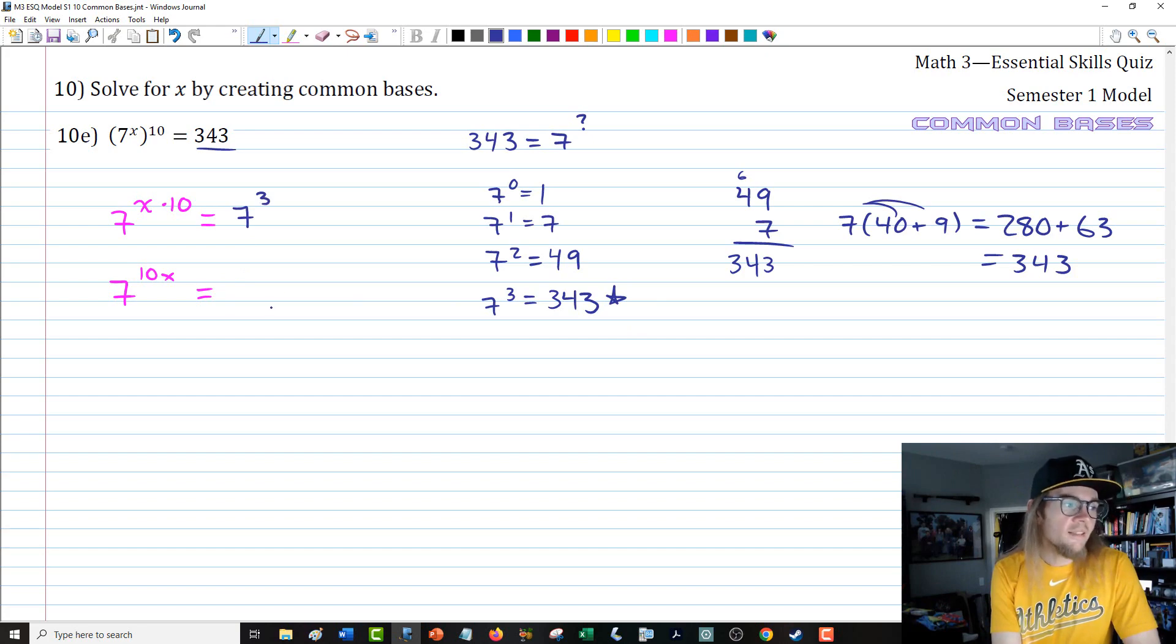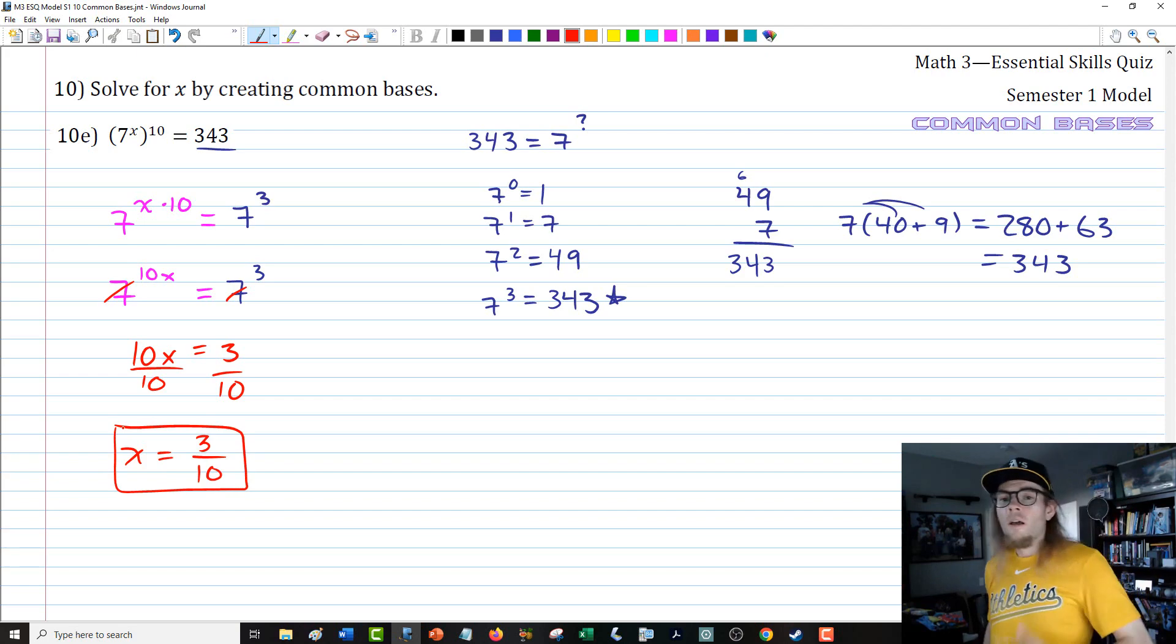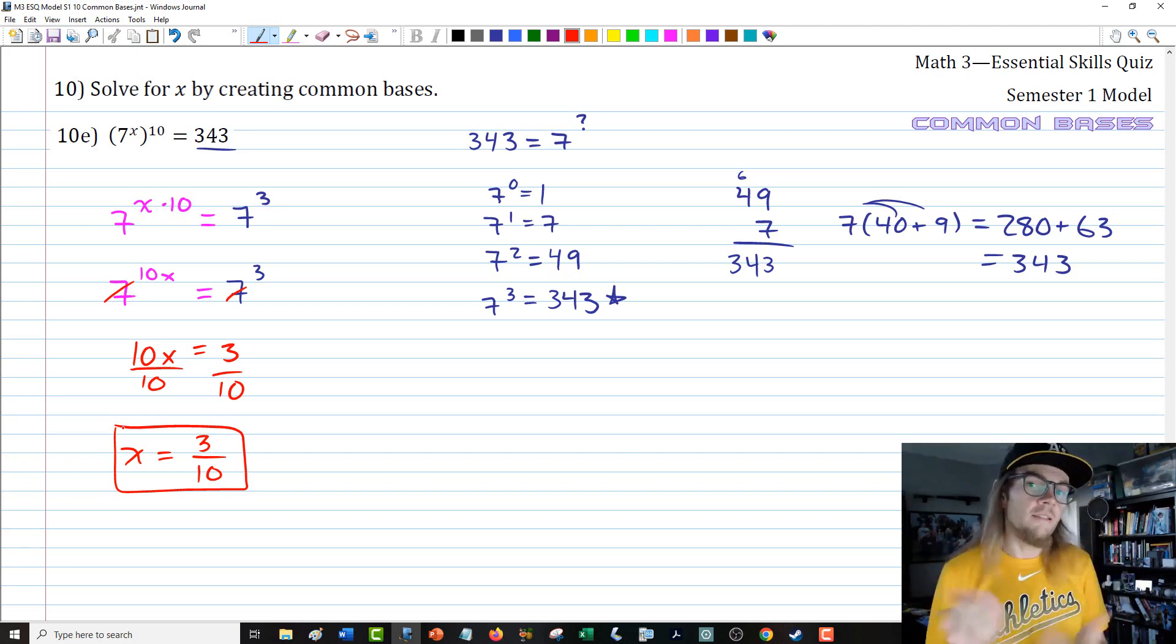That means we can write this as 7 to the 10x equals 7 to the 3rd. We're back in the happy place. 10x equals 3, so divide by 10. We're going to get that x is equal to 3 tenths. It took a little bit of exploring. If you didn't know your powers of 7, then you're not alone. But a little bit of experimentation, a little bit of arithmetic gets you right through there.